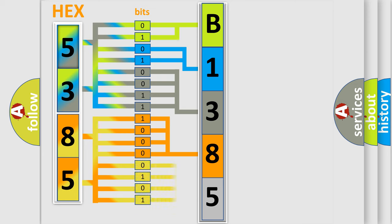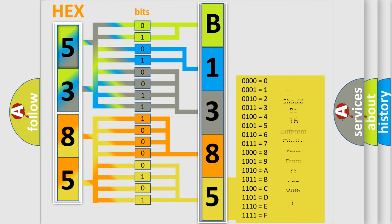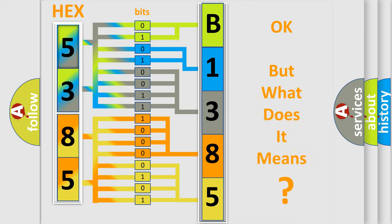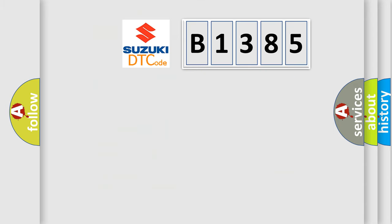A single byte conceals 256 possible combinations. We now know in what way the diagnostic tool translates the received information into a more comprehensible format. The number itself does not make sense to us if we cannot assign information about what it actually expresses. So, what does the diagnostic trouble code B1385 interpret specifically for Suzuki car manufacturers?